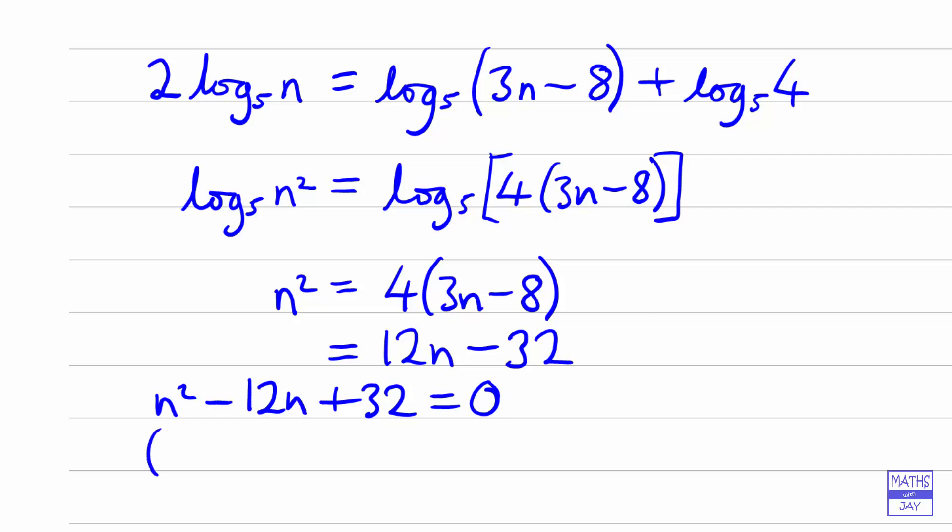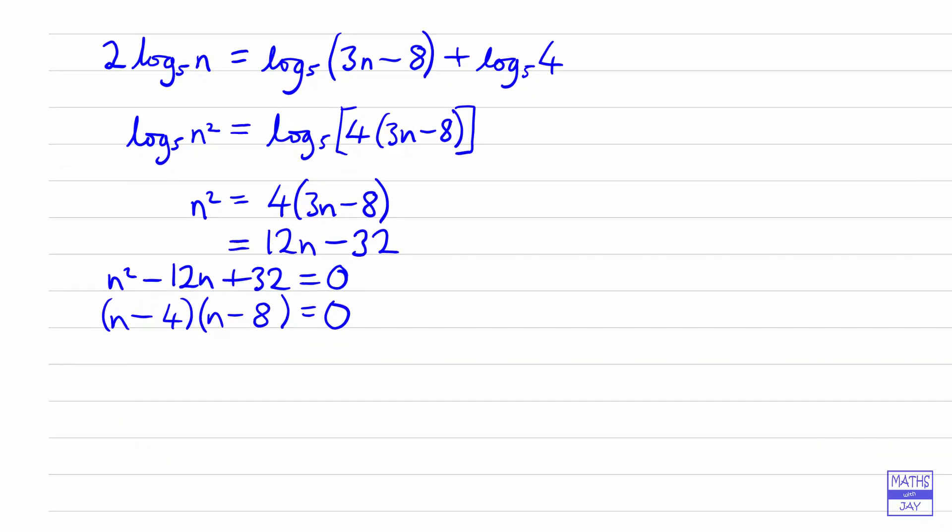And that factorizes. So that's going to be 4 and 8 in there. So n minus 4 times n minus 8 equals 0. So n is equal to 4 or 8.